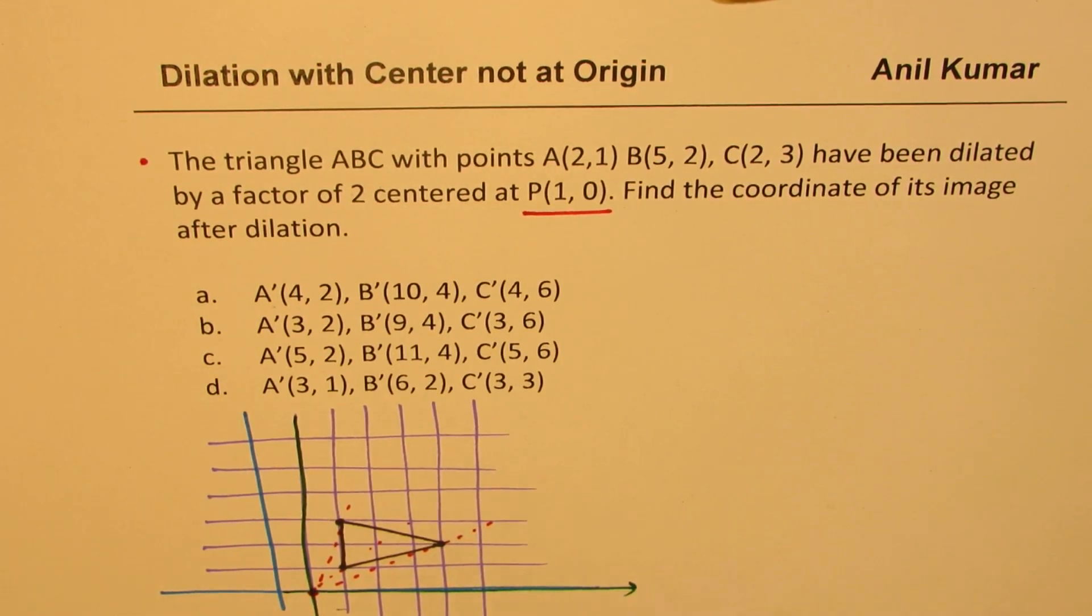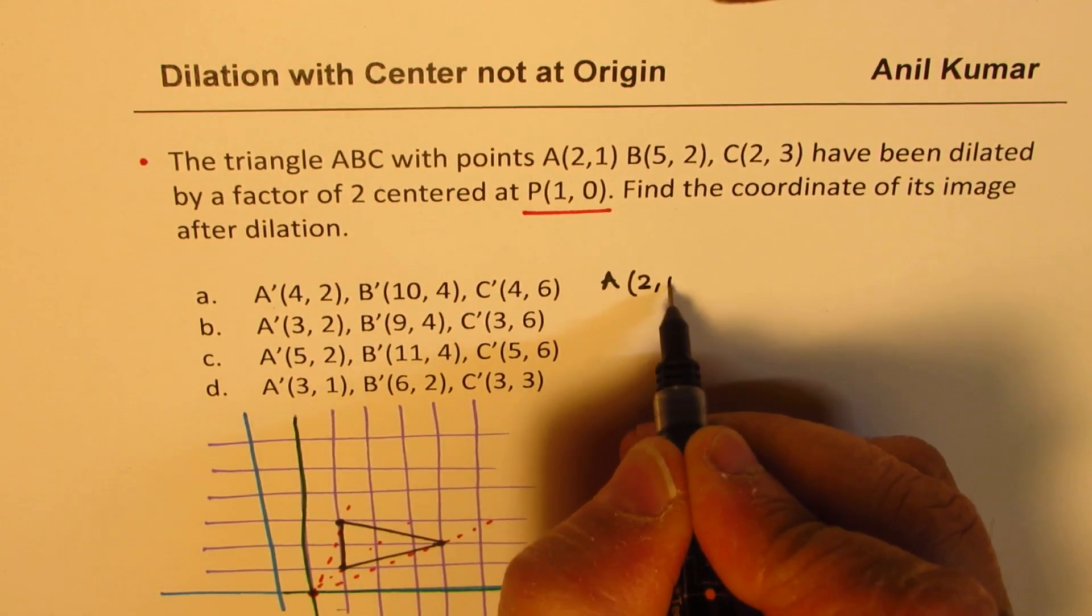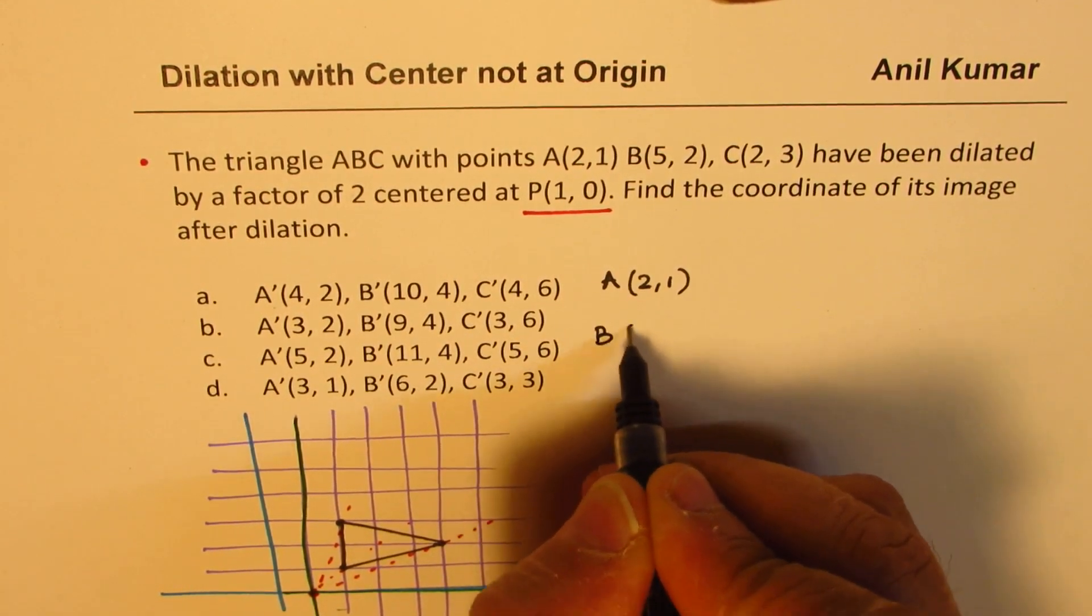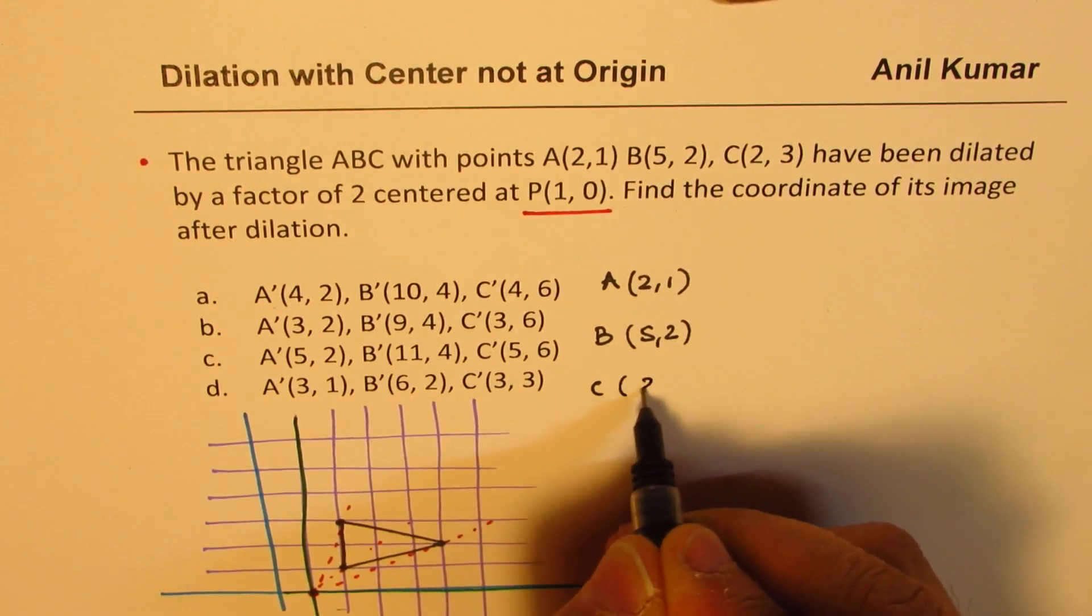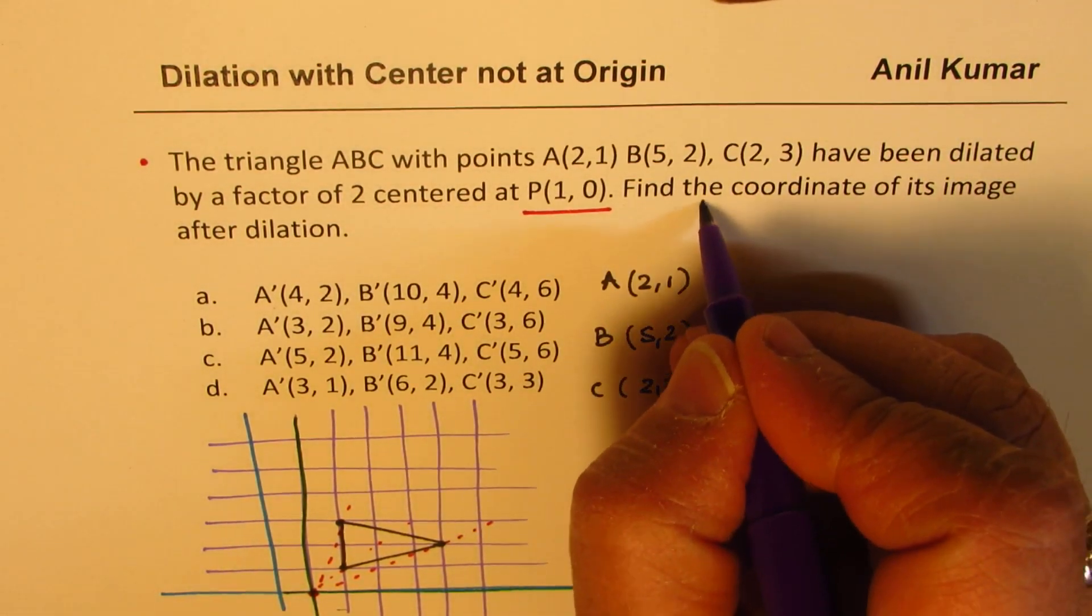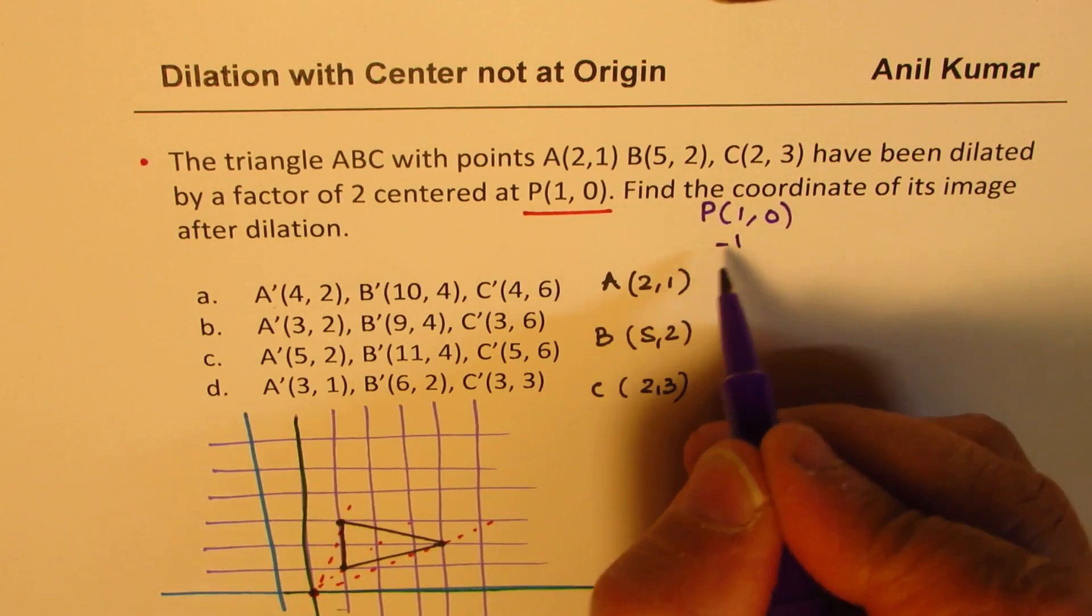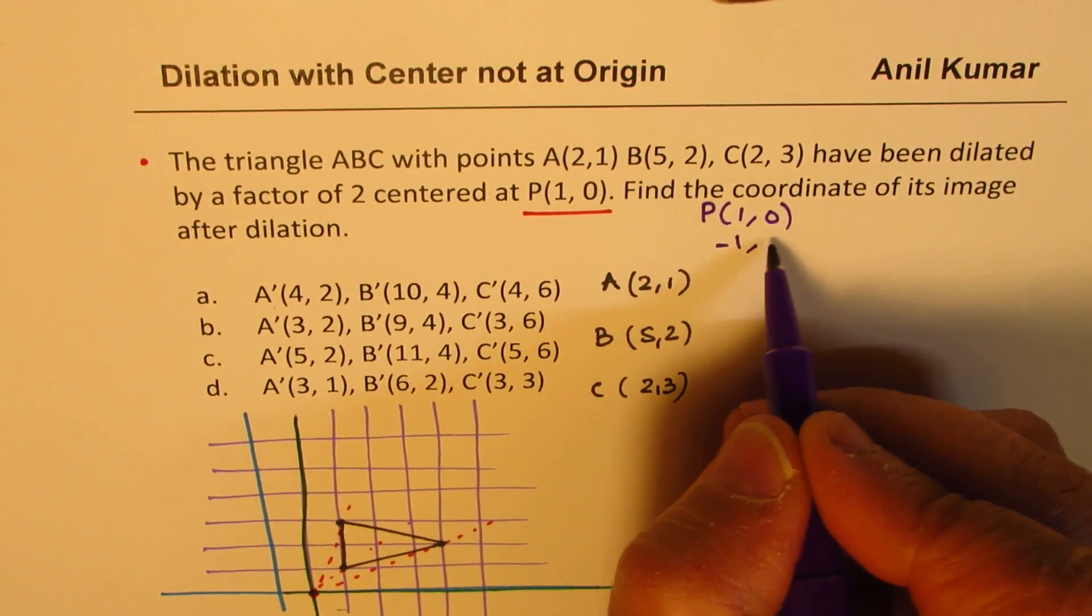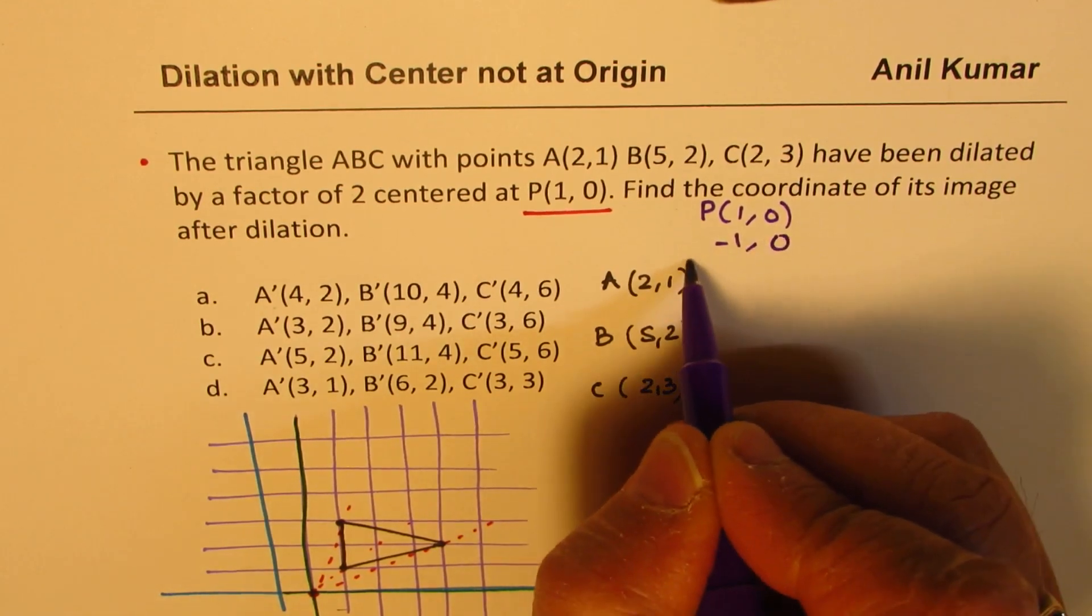So what we will do here is we will write down our original points which is A which is (2,1), B which is (5,2) and C (2,3). Now since the point is not origin but the point P is given to us as (1,0) and it is on the right side each x value will be decreased by 1. So that is the change. But there is no change in the y value since it is 0. So that remains same.